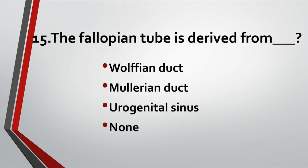The fallopian tube is derived from: Option A: Wolffian duct. Option B: Müllerian duct. Option C: Urogenital sinus. Option D: None of these. Answer: Option B, Müllerian duct.